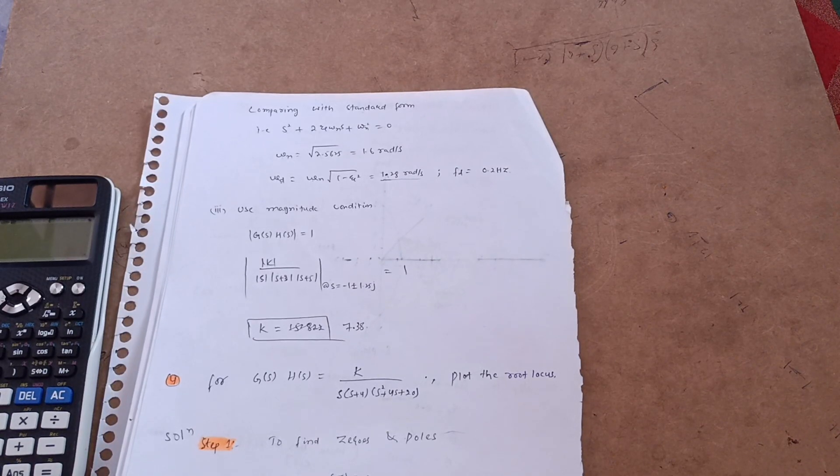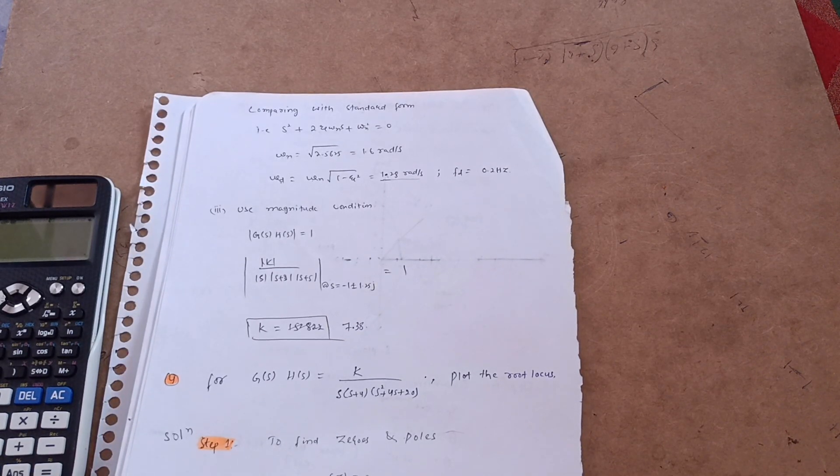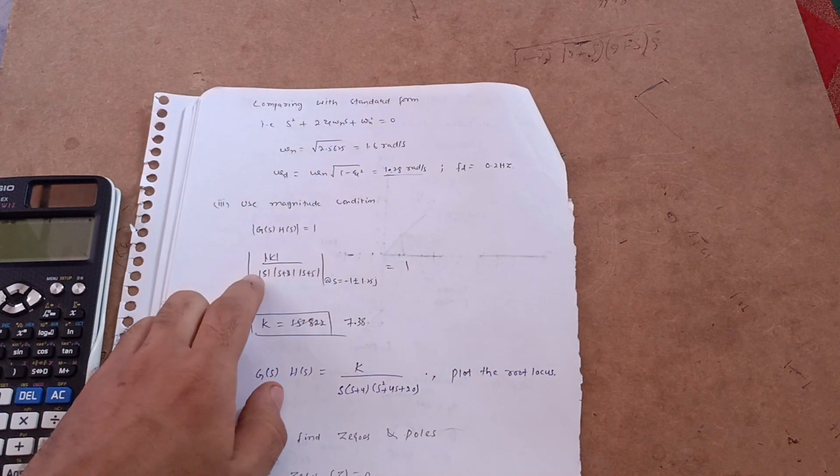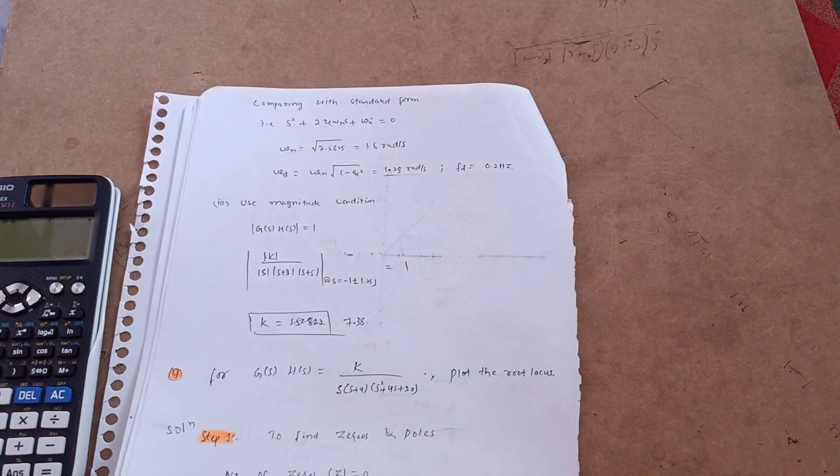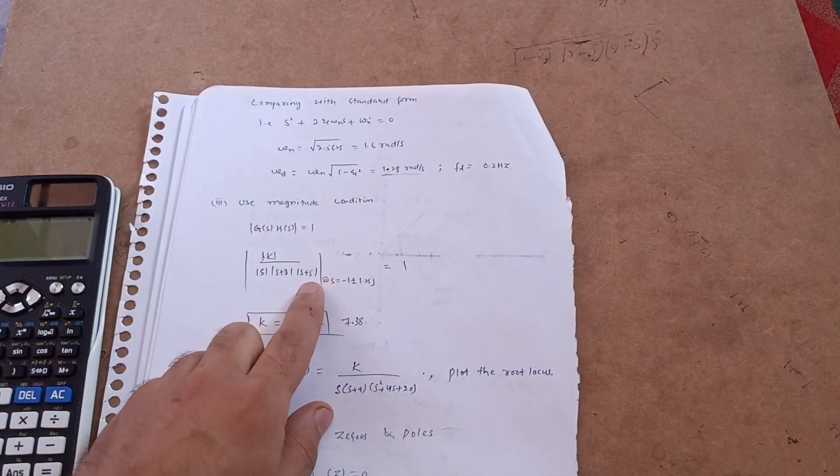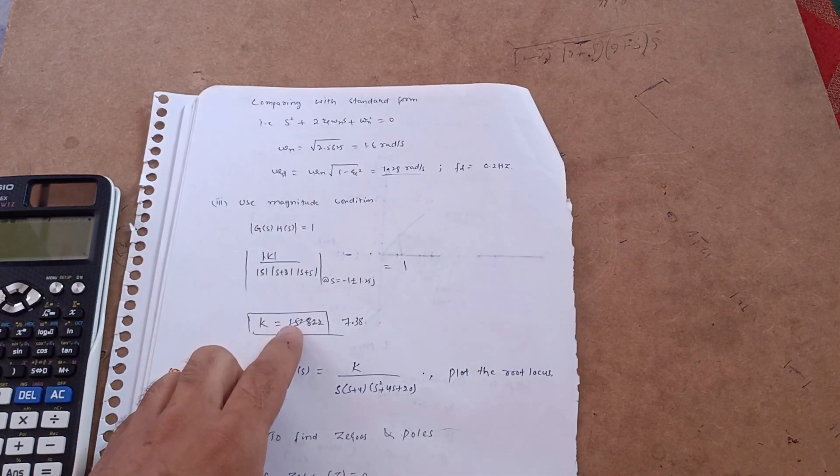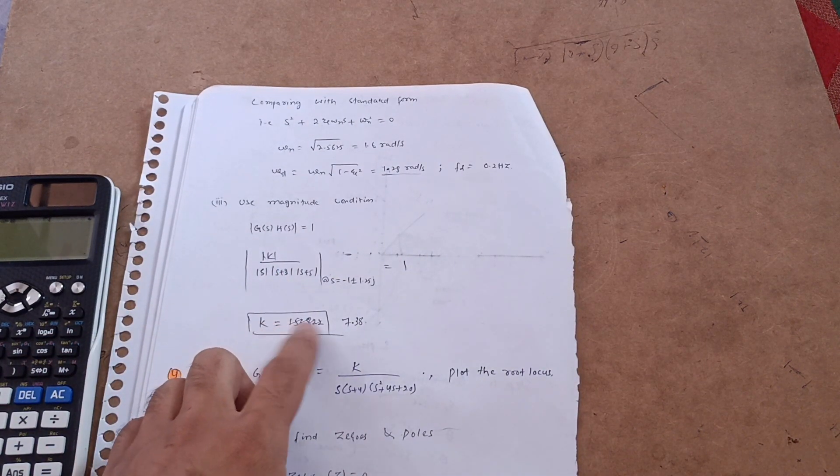Hello friends, welcome back again. In my notes, if you're observing here, the mod of k divided by s into s plus 3 s plus 5, you have to find the magnitude. How to put this value in calculator I will show you. I have written the answer; it was wrong actually, so I corrected it to 7.38.